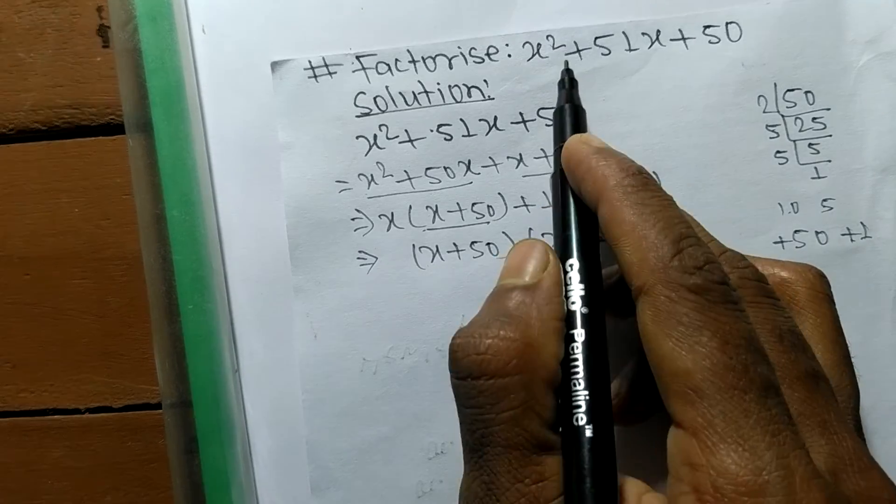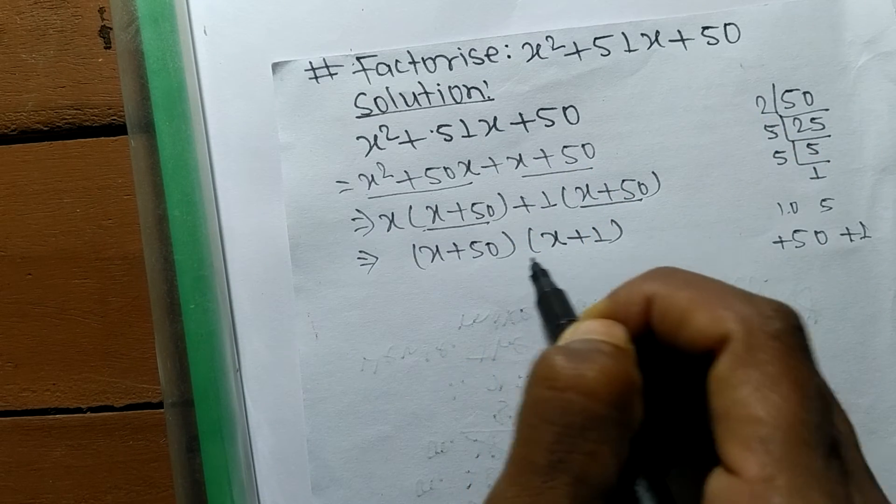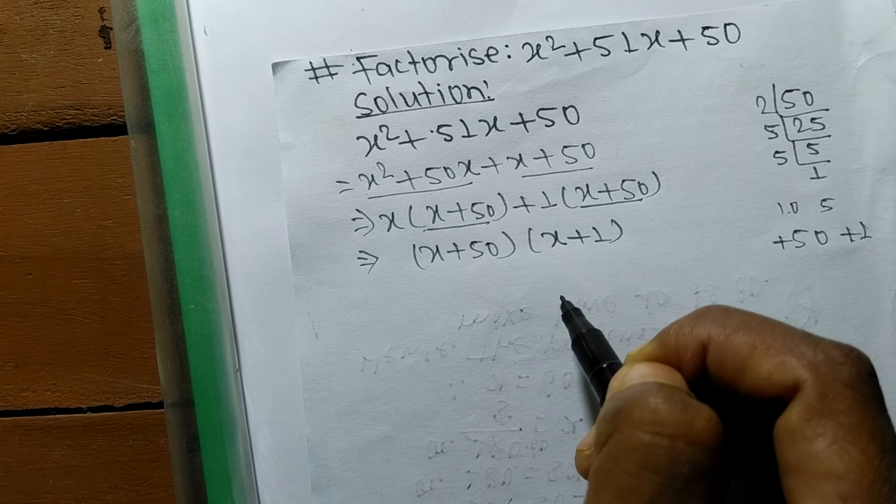So the factors of x² + 51x + 50 are (x + 50) and (x + 1).